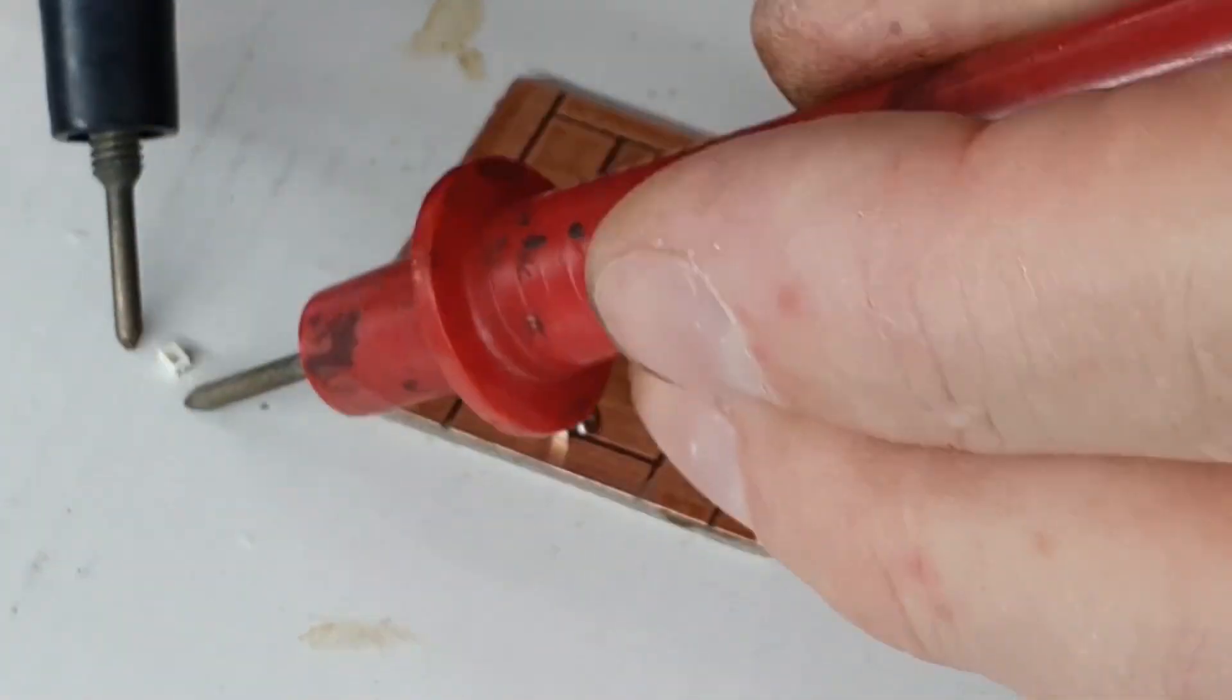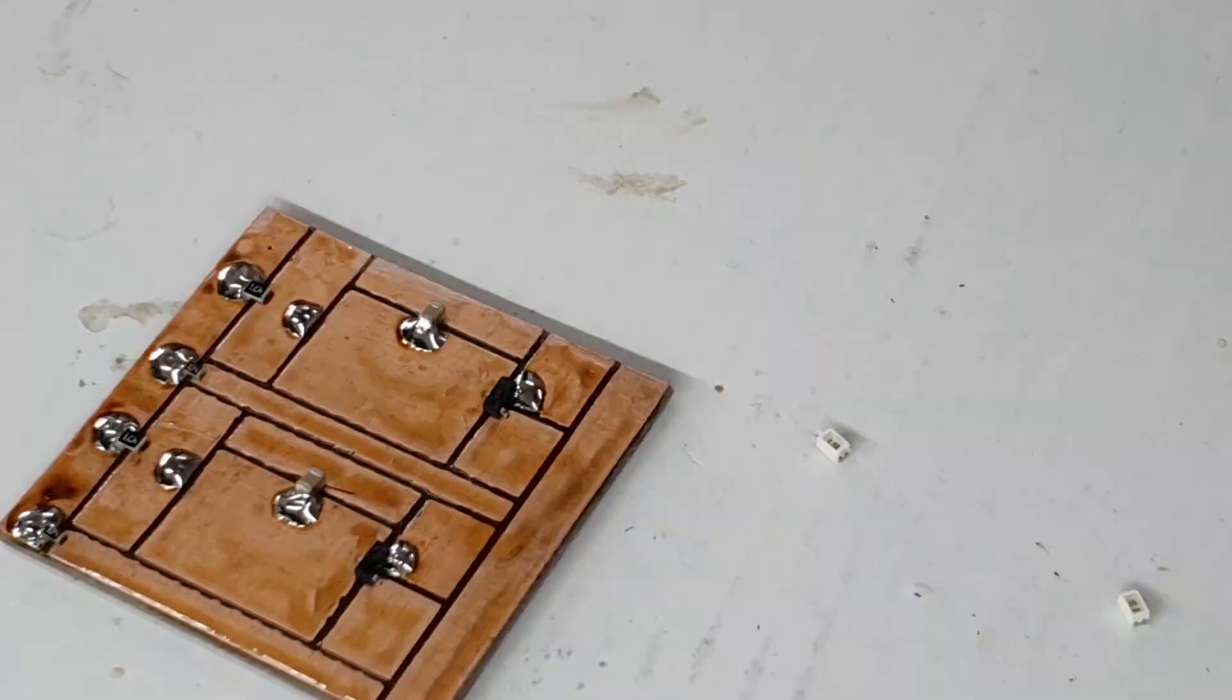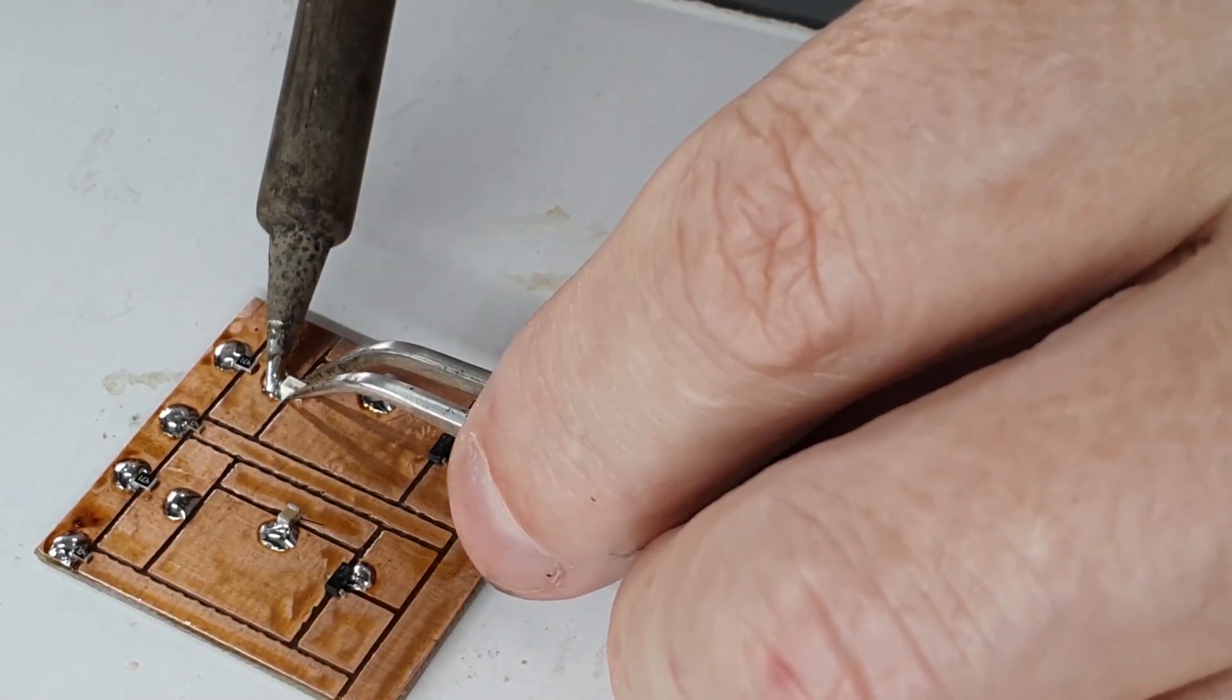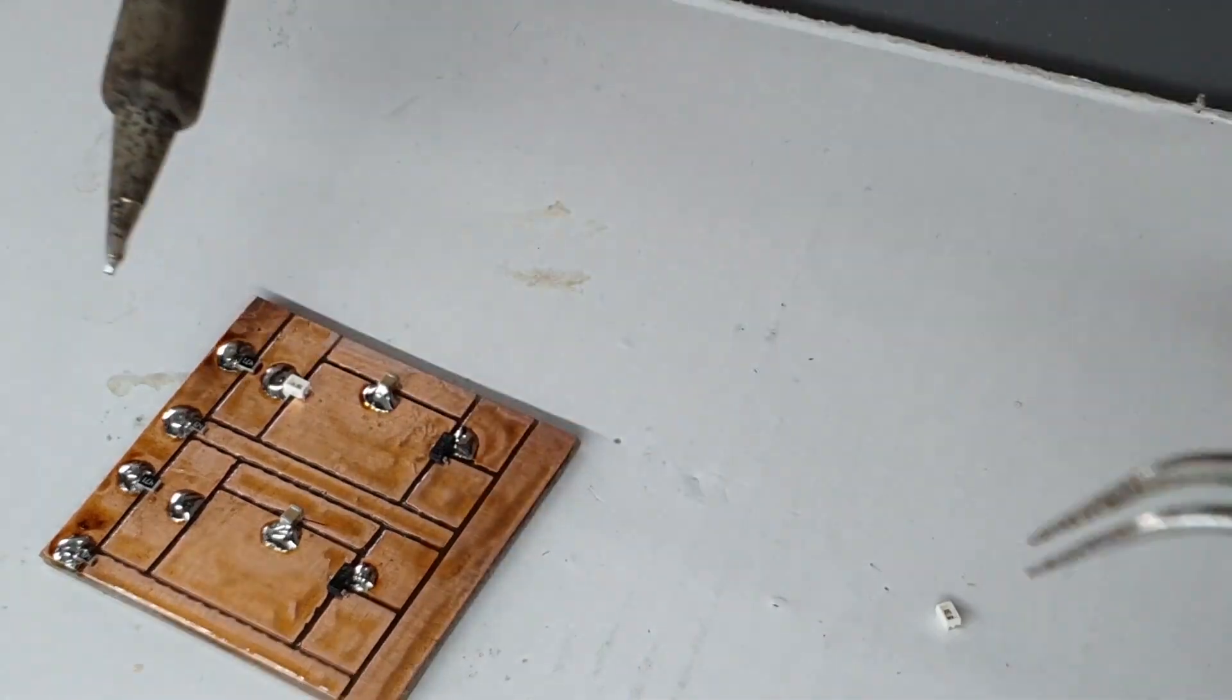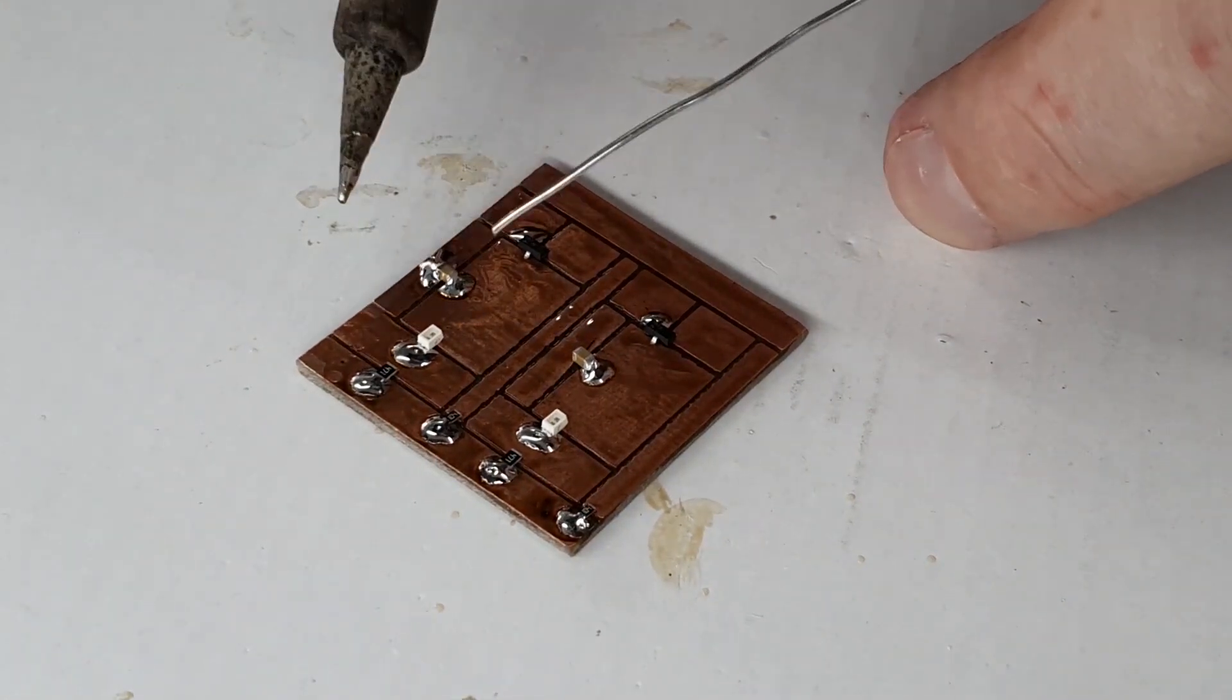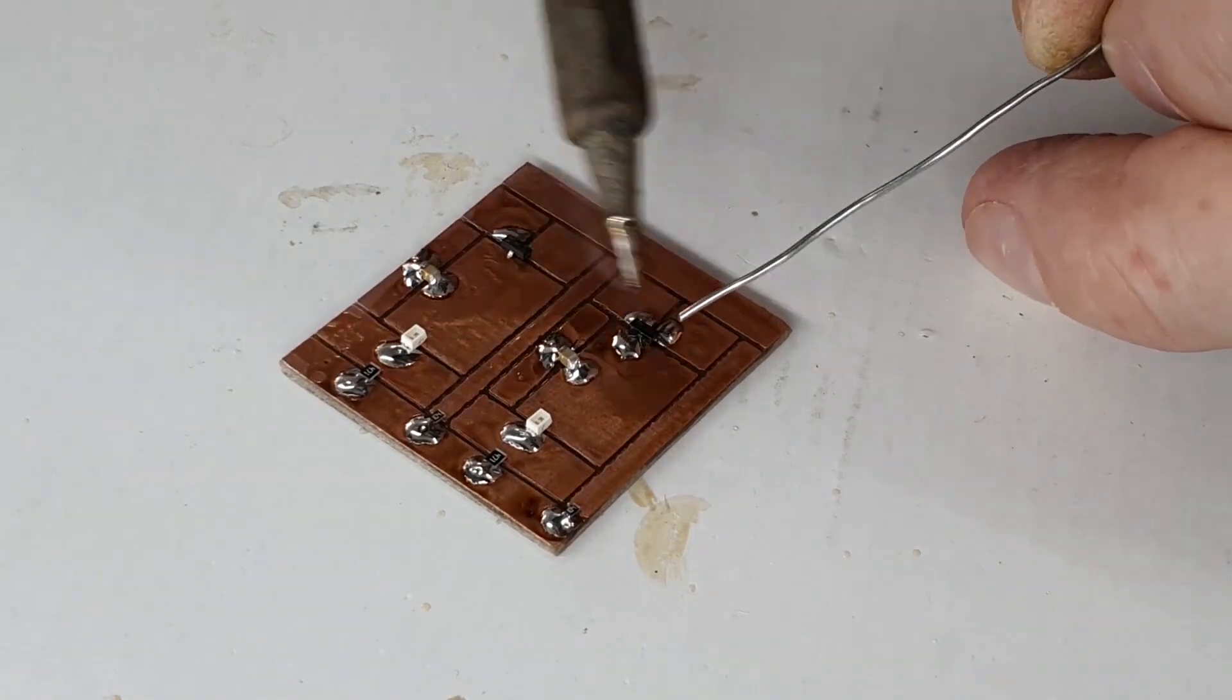Parts with polarity like LEDs and diodes should be checked before installation for correct orientation. Once you have all the parts placed, go around and solder all the leads on all the parts.